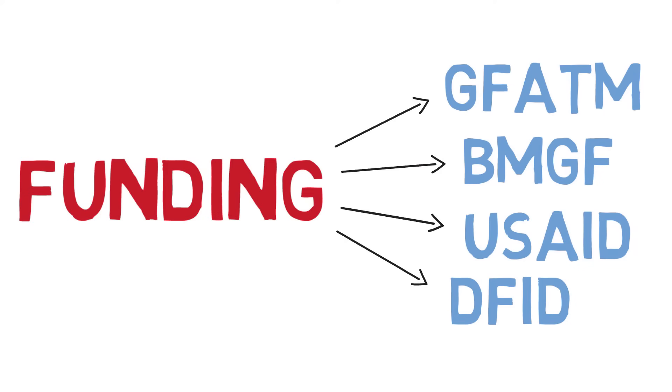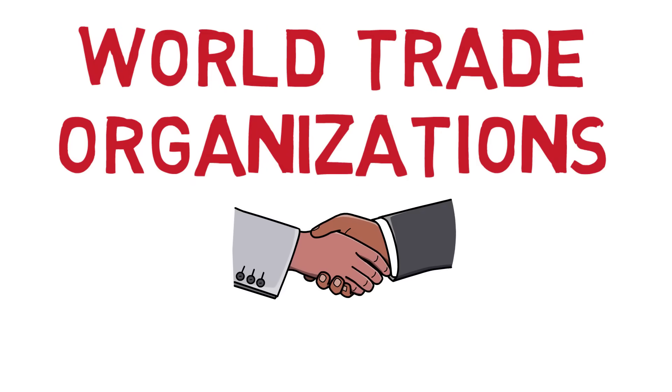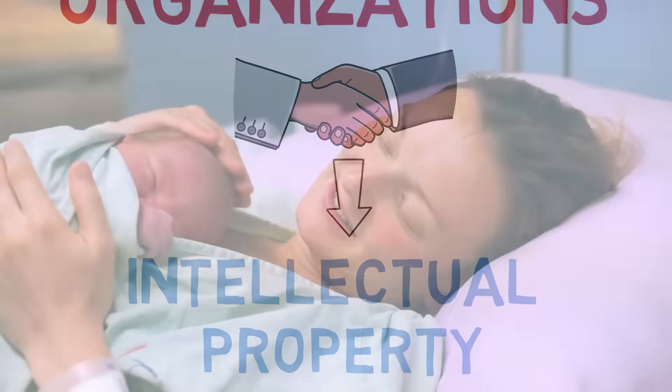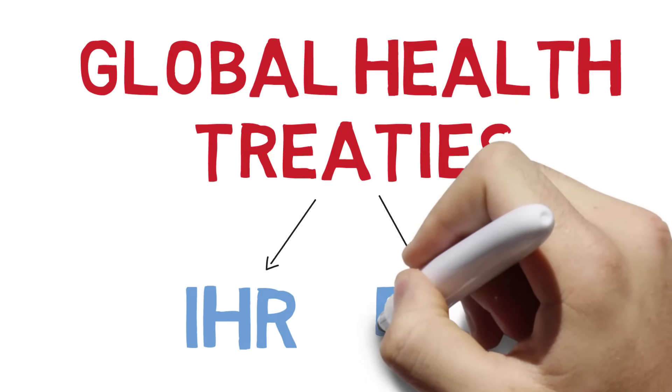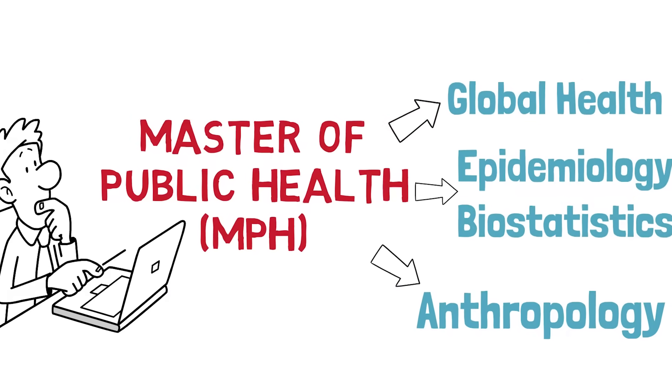You're going to learn about access to medicines in low- and middle-income countries and the importance of some of the World Trade Organization's multilateral trade agreements like the TRIPS Agreement, which is the trade-related aspects of intellectual property. You're going to learn about maternal, newborn and child health, human rights and health, global health treaties like the IHR and the FCTC. So there's lots of things you're going to learn about the global health space if that's what your MPH focuses on.